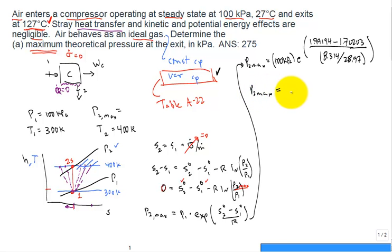So when we calculate P2 max, it comes in at 274.6 kPa. We'll put it to three significant digits, 275 kPa. That is our maximum theoretical exit pressure. That ends that problem.